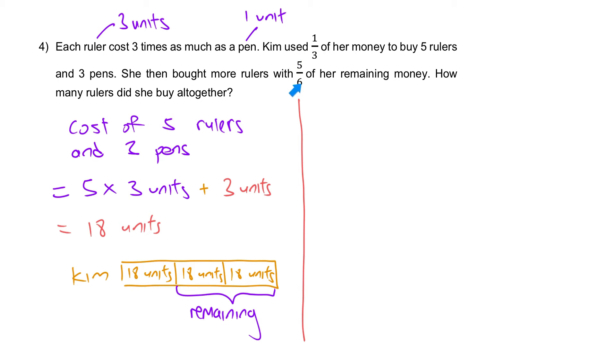Five out of six of this 36 units to buy more rulers. Hence, let's calculate.